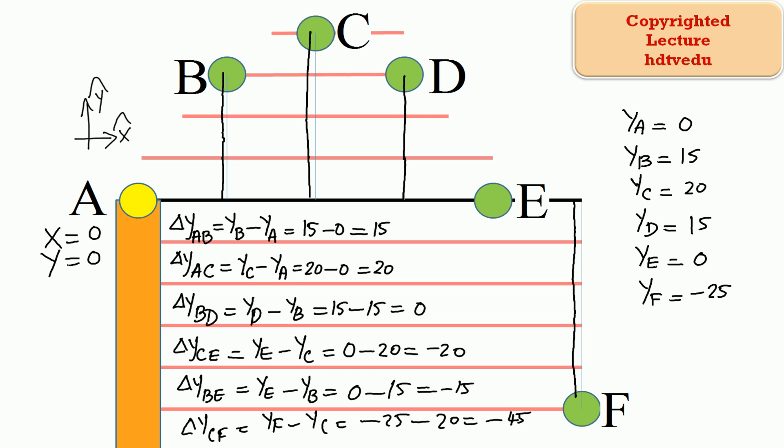What is the vertical displacement between points A and B? We already know the position of point A. Going from point A to point B: point B is 15, so 15 minus 0 is 15. Delta y between points A and B is positive 15, because point B is vertically above point A. So the vertical displacement between points A and B is positive 15.